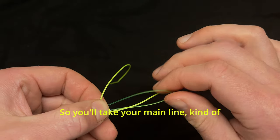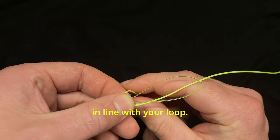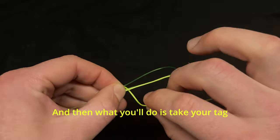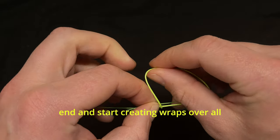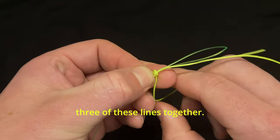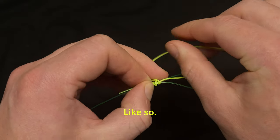Take your main line and make sure that it's in line with your loop. Then take your tag end and start creating wraps over all three of these lines together.